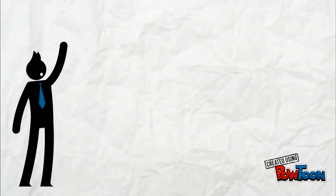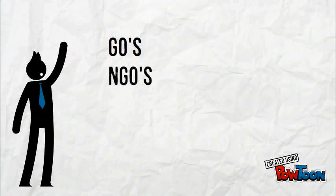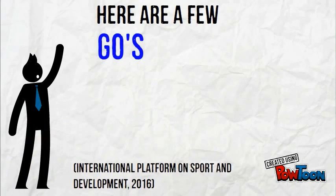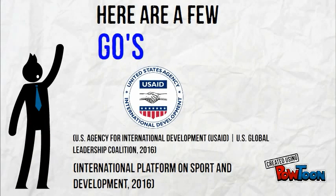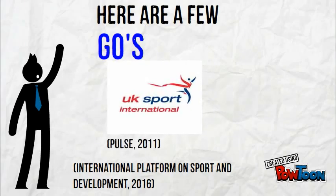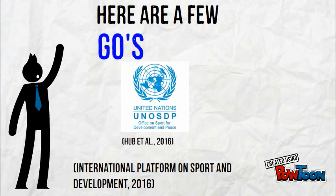There are many different organizations to try and help with sport for development. These are split up into two categories: governing organizations or non-governing organizations. Here are a few examples of GOs: USAID, Swiss Agency for Development and Cooperation, UK Sport International, and UN Sport for Development.